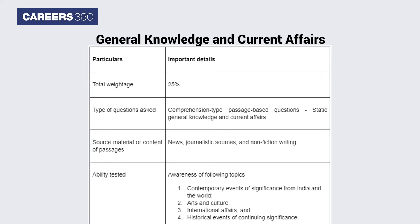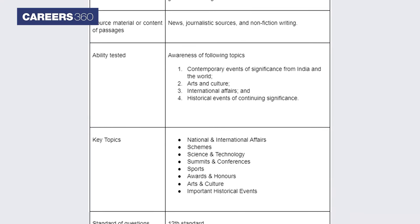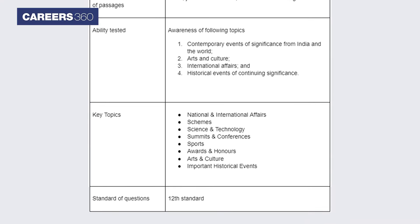The general knowledge and current affairs section will comprise comprehensive-type passage-based questions from static general knowledge and current affairs. The general knowledge section will assess candidates on their knowledge of contemporary events of India and the world regarding arts and culture, international affairs, and historical events and their significance. Candidates can take the help of Lucent's General Knowledge and Pratyogita Darpan for this section. Also, reading national newspapers will be helpful for current affairs preparation.